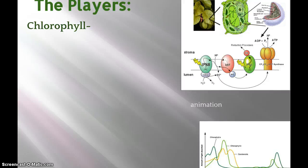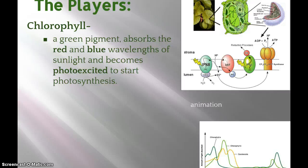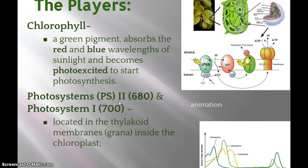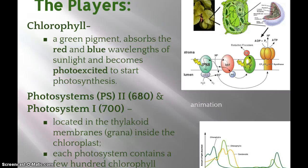The first player we want to talk about is chlorophyll — a green pigment that absorbs red and blue wavelengths and gets excited by the Sun, which starts photosynthesis. Photosystem 2 and Photosystem 1 are given those numbers because of the nanometer wavelength of light they absorb. They are located on the thylakoid membranes inside the chloroplasts, and each photosystem contains a few hundred chlorophylls.